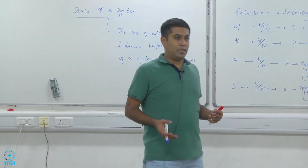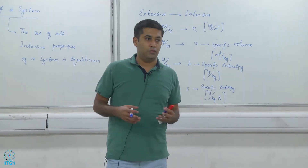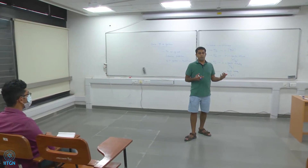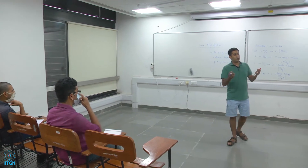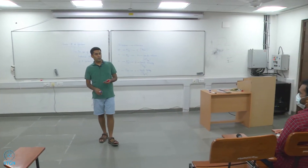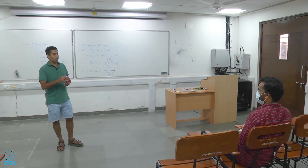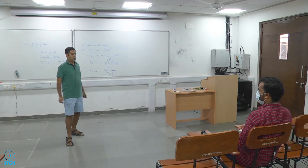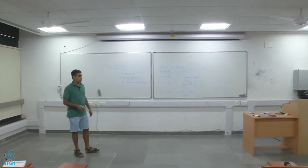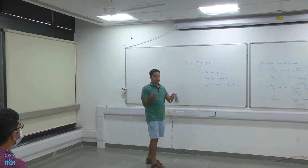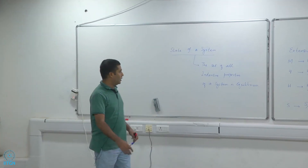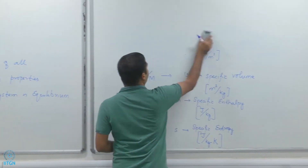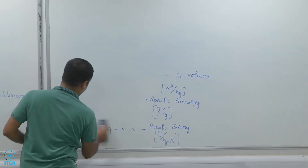Thermodynamic systems are a little less complex, so we take all the intensive properties of the system together and call them the state of the system. That system state is only defined when the system is in equilibrium. So we need to talk about this equilibrium.